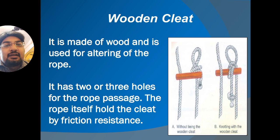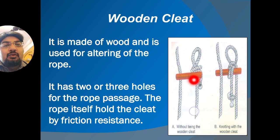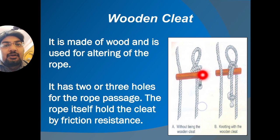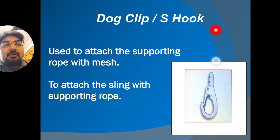The wooden cleat is made of wood and is used for altering the rope length. It has two or three holes through which the ropes are passed, and the rope holds the cleat by friction resistance. When you want to adjust the length, keep the wooden cleat horizontal. When you want to fix the rope at a particular point, keep it in an inclined position so it does not move.